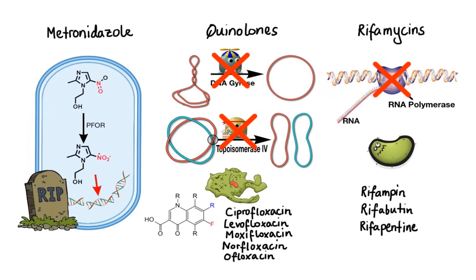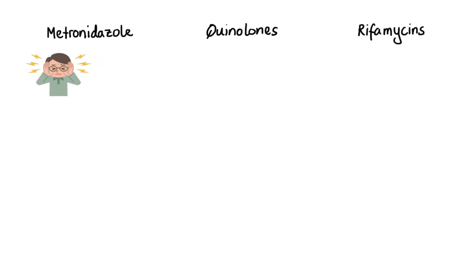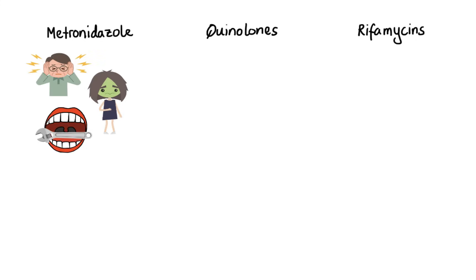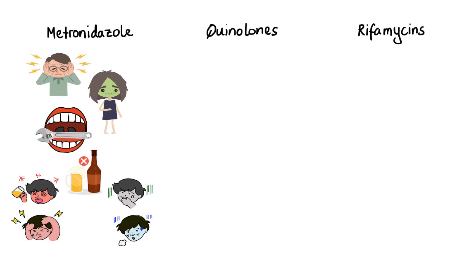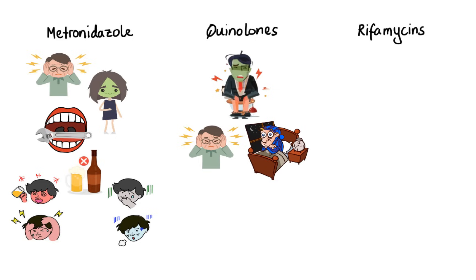When it comes to side effects, metronidazole commonly causes headaches, nausea, and metallic taste in the mouth. Furthermore, because metronidazole inhibits metabolism of alcohol in the body, combining it with alcohol causes unpleasant symptoms such as vomiting, flushing of the skin, tachycardia, and shortness of breath. Quinolones most commonly cause gastrointestinal side effects such as nausea, vomiting, and diarrhea, as well as headache and insomnia. Less common but more serious adverse effects include prolongation of the QT interval, tendon damage, and peripheral neuropathy.